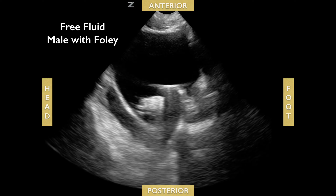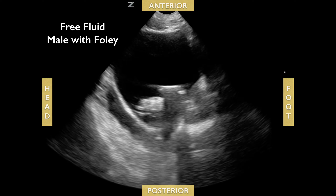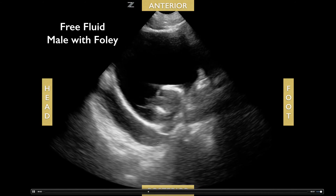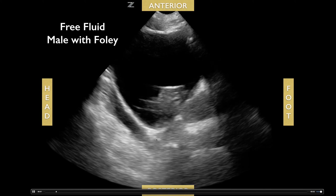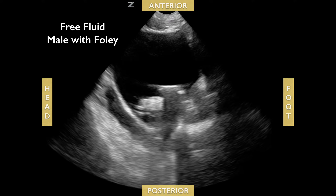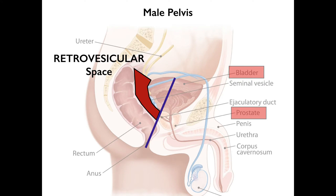Here's a patient with a Foley placed and you can see free fluid just posterior to the bladder. To recap, remember to locate the prostate and look posterior to that prostate and bladder in the retrovesicular space.